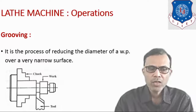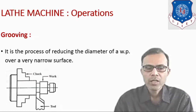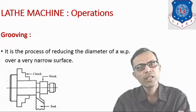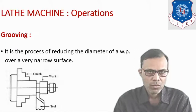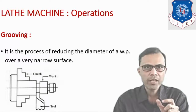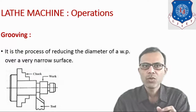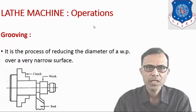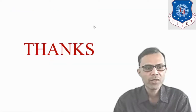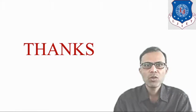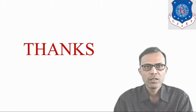The next operation is the grooving operation. It is the process of reducing the diameter of the workpiece over a very narrow surface. Whatever shape we want to produce over a very narrow surface, a form tool of that shape is used for this particular operation. That is known as the grooving operation. These are some of the operations which can be performed on the lathe machine. Thank you very much for watching.